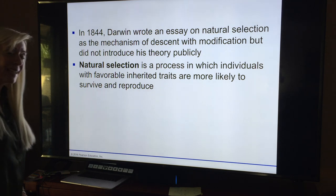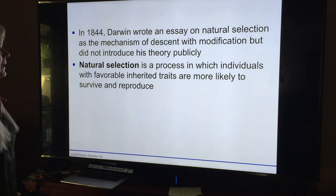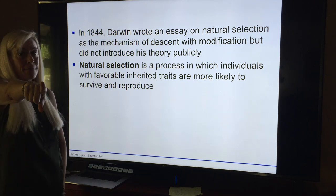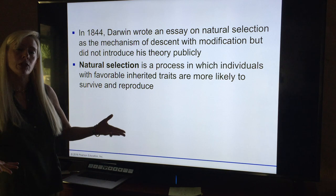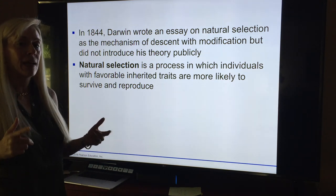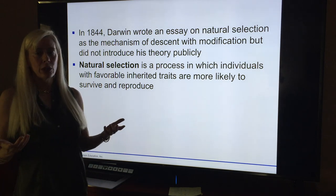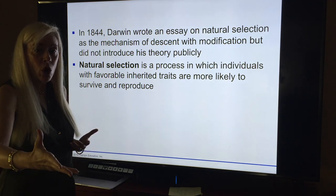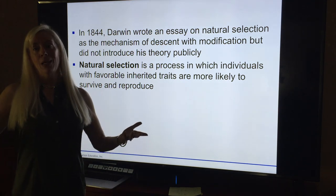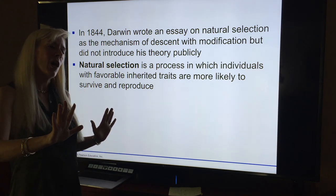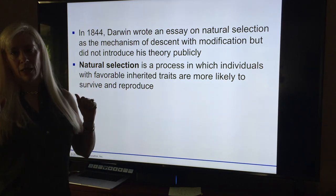In 1844 he wrote an essay on natural selection as the mechanism of descent with modification, but did not introduce his theory publicly. Why? His wife said: 'The only thing we have around here is going to religious functions and having tea with the ladies. If you start saying the church is wrong by publishing this, who am I going to play with?' So Darwin put off publishing it.